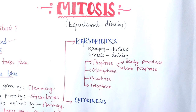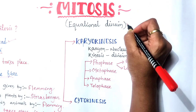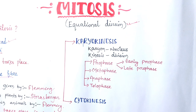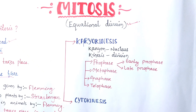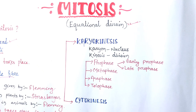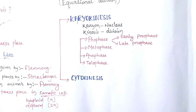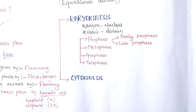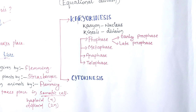We have already discussed that mitotic division is also known as equational division, because the chromosome number of the parent cell is similar to that of the daughter cell. In karyokinesis there are four subphases: prophase, metaphase, anaphase, and telophase. Prophase is again divided into two types — early prophase and late prophase. We will discuss all these subphases one by one.